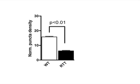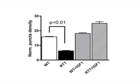Therefore, we treated Rett-derived neurons carrying different MECP2 mutations with IGF-1. In IGF-1-treated neurons, we observed an increase in glutamatergic synapse number.